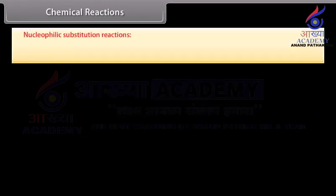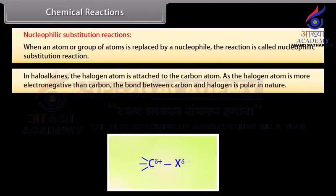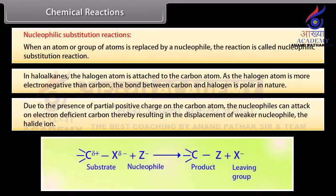Nucleophilic substitution reactions: when an atom or group of atoms is replaced by a nucleophile, the reaction is called a nucleophilic substitution reaction. In haloalkanes, the halogen atom is attached to the carbon atom. As the halogen atom is more electronegative than carbon, the bond between carbon and halogen is polar in nature. Due to the presence of partial positive charge on the carbon atom, nucleophiles can attack on the electron-deficient carbon, thereby resulting in the displacement of the weaker nucleophile, the halide ion.